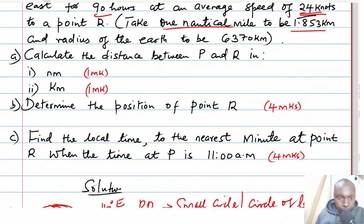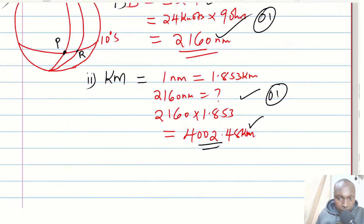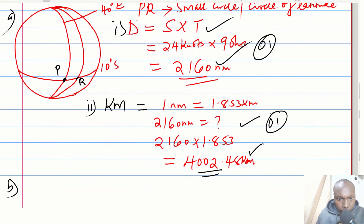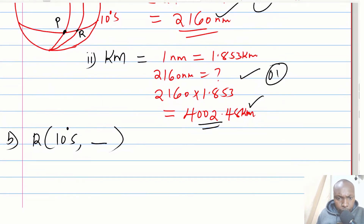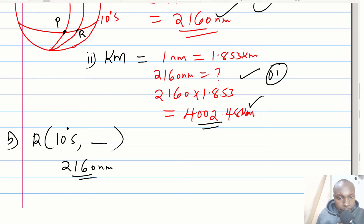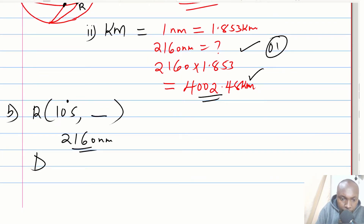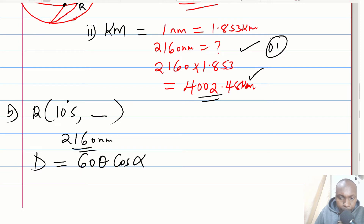Now Part B: determine the position of point R. Since the ship sailed due east, R lies on the same latitude as P, which is 10 degrees south. What we don't know is the longitude. To get the longitude, we use the distance PR, which is 2160 nautical miles. The formula for distance along the circle of latitude in nautical miles is: distance = 60 × θ × cos(α), where θ is the longitude difference and α is the latitude angle.